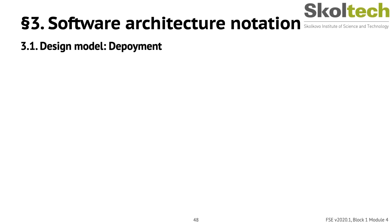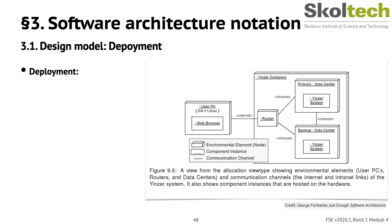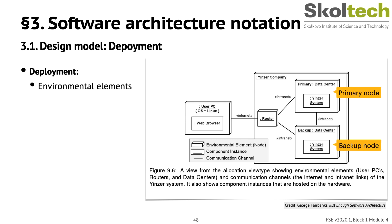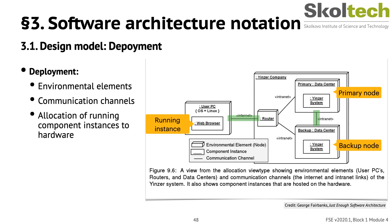The last important diagram type in this video is the deployment diagram. As the system is deployed onto hardware, the hardware and its configuration will impact how the system performs. This figure shows component instances for the system deployed at both a primary and backup data center — examples of environmental elements, or nodes. It also shows that the user's PC is connected to the data center by the internet, and the primary data center is connected to the backup via an intranet. The diagram shows how running component instances are allocated to hardware — for example, the user PC hardware runs an instance of the web browser.